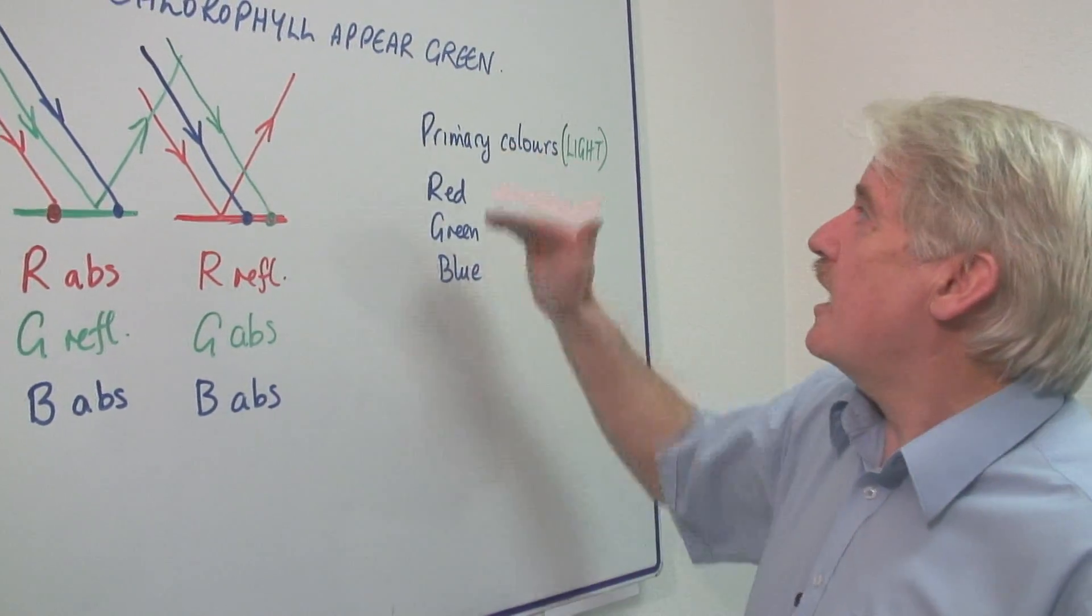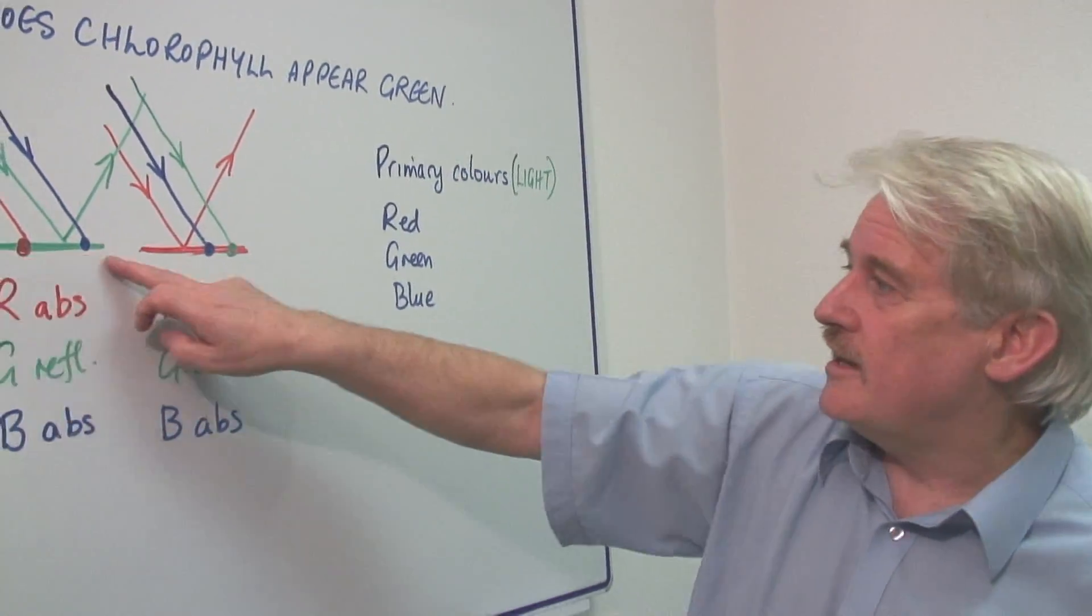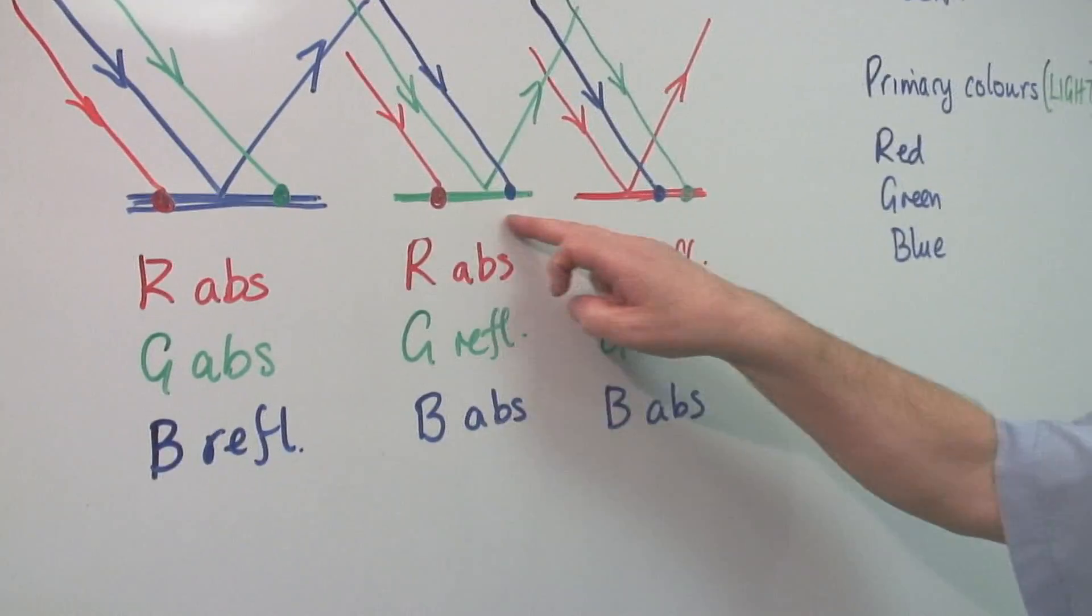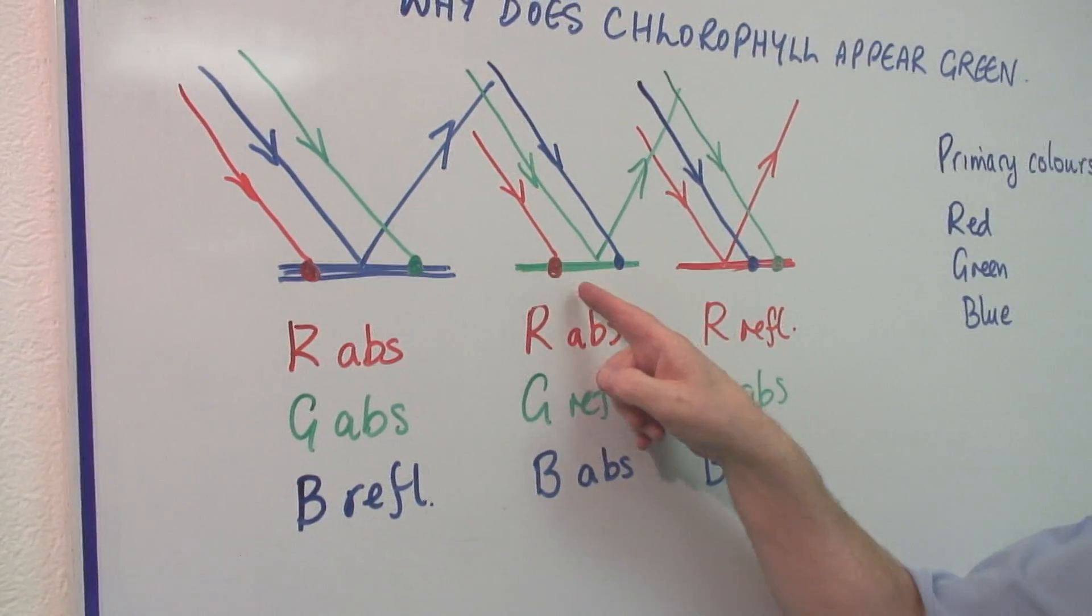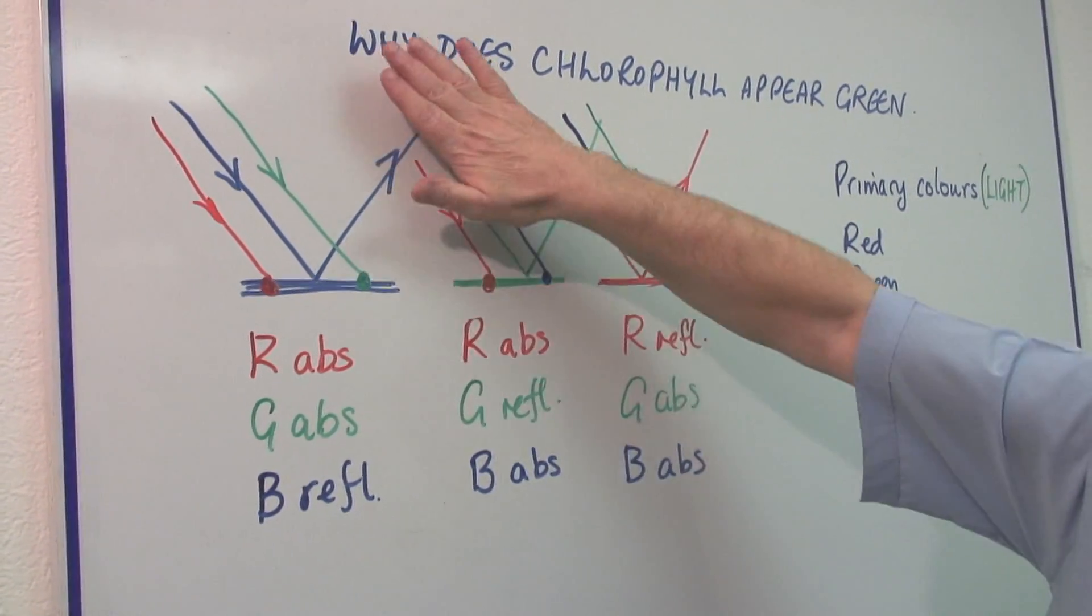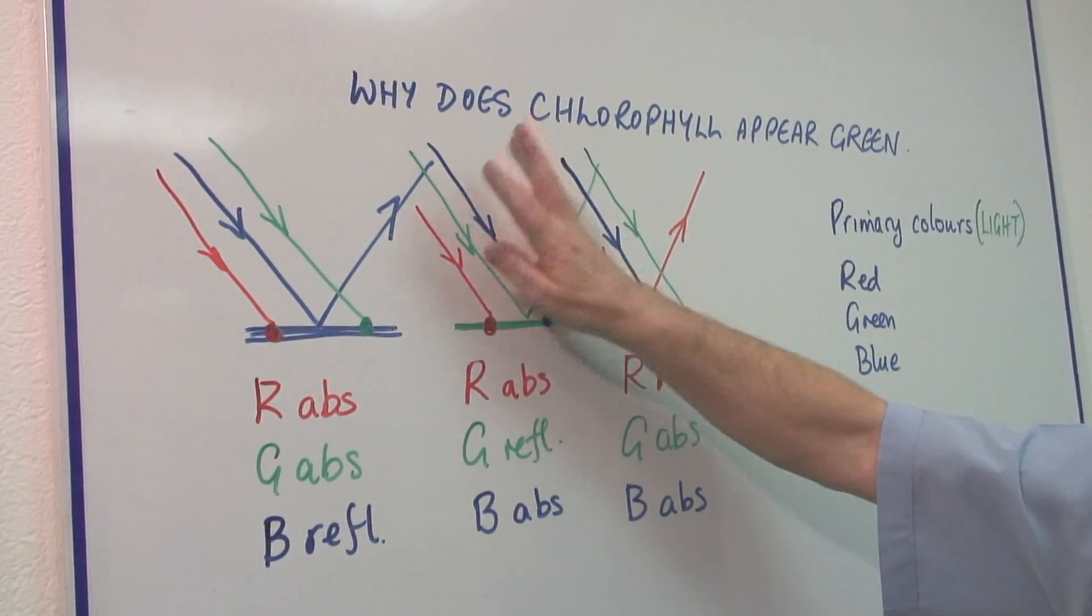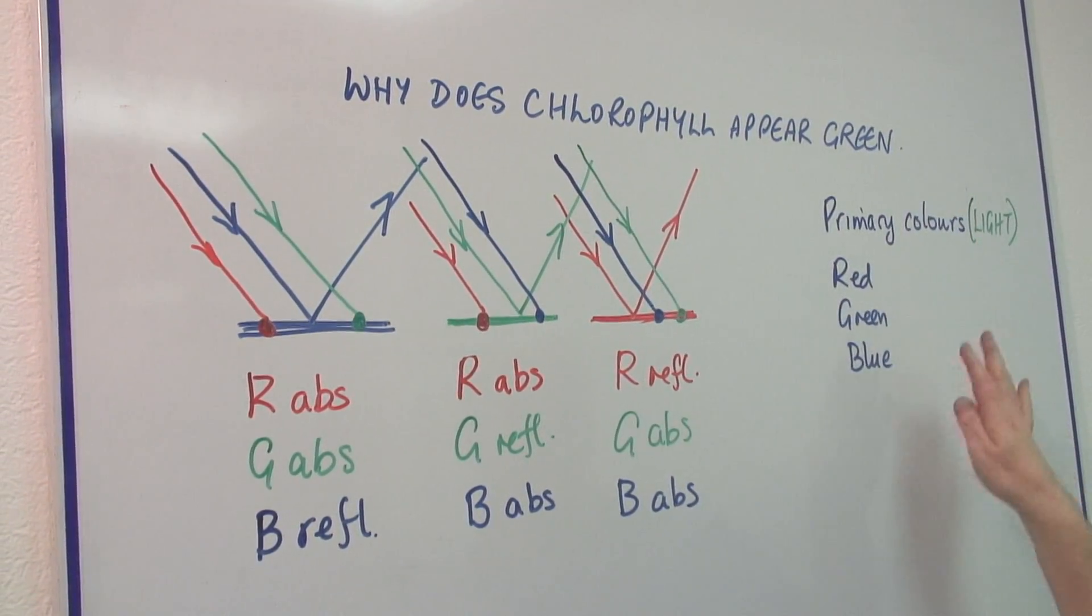Now let's have a look at our leaf. Our leaf is green. Here's our green leaf, a green surface. It's a green surface because the red light that comes in—this is white light, remember, so it contains all three primary colors.